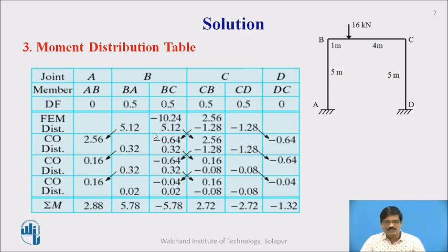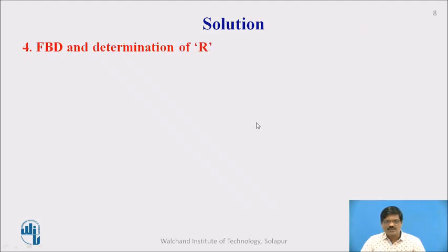We proceed with the balancing of joints as usual and carry over wherever applicable. From B, carry over is possible towards A, and from C carry over is possible towards D. From B, carry over is towards C, and from C carry over is towards B. The distribution is continued in this iterative process until we get a very small and negligible amount of moment left. After the moment distribution process, we get the final moments in all the members, which we use to calculate the restraining force R.